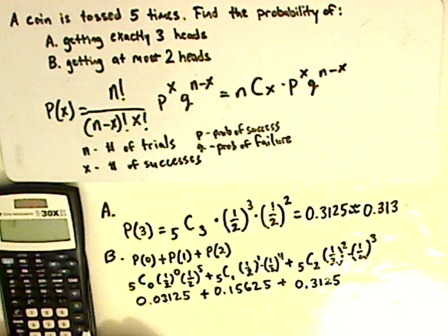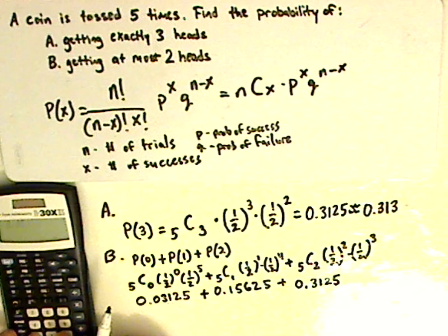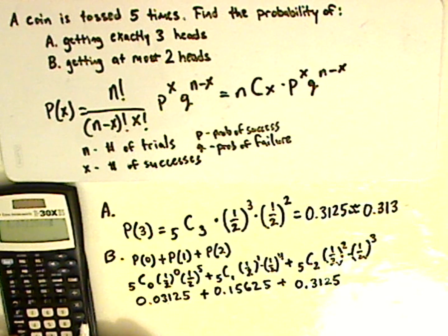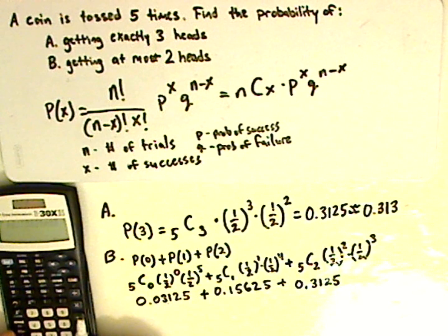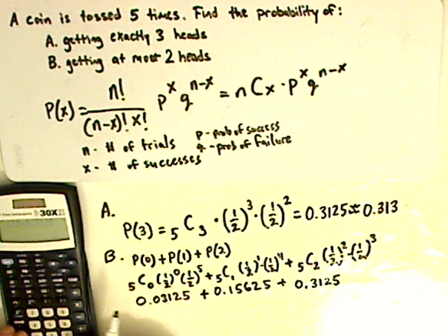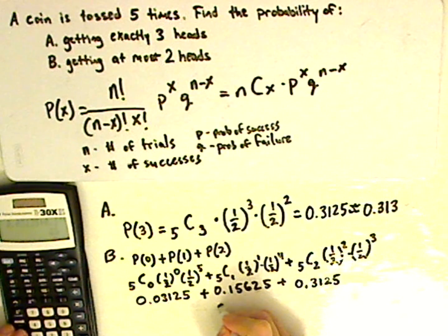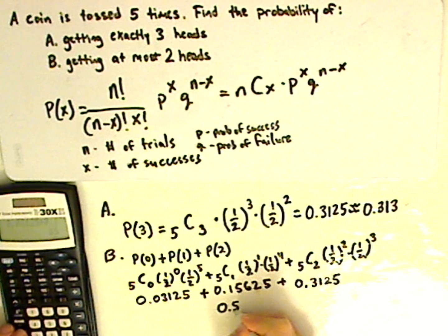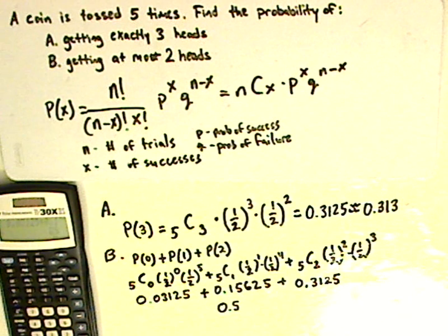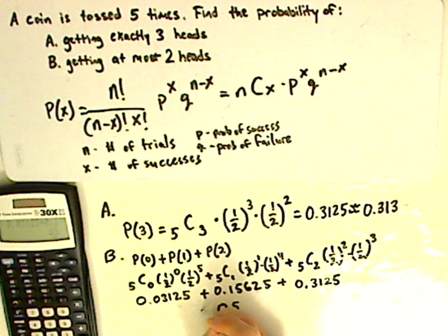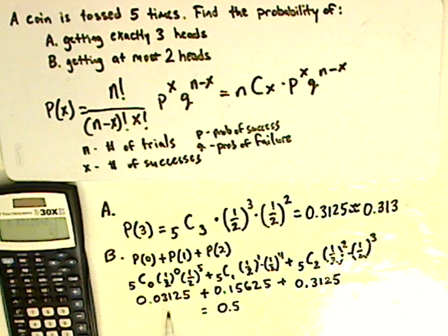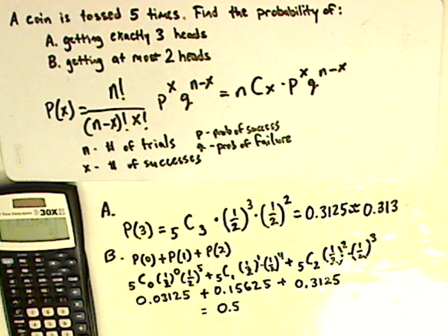So then I'm just adding these together. So 0.03125 plus 0.15625 plus 0.3125. And my answer is 0.5. Now, if you rounded in the in between steps, your answer is going to be a little different. So just be aware of that. And that's it today.